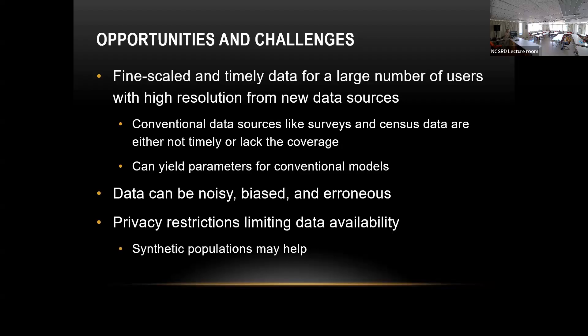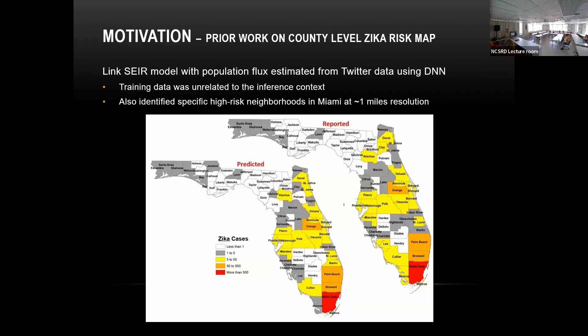We can use synthetic populations to help with that. We use a traditional infection spread model and use AI very carefully — we don't try to do all predictions using AI. Rather, we use a science-based model for our actual prediction because we can get the mechanism, explain what happened, and give causality.